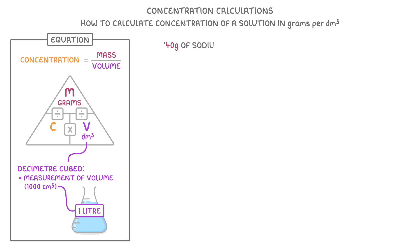So, if we had 40 grams of sodium hydroxide dissolved in 2.5 decimetres cubed of water, the concentration would be 40 grams divided by 2.5 decimetres cubed, so 16 grams per decimetre cubed.